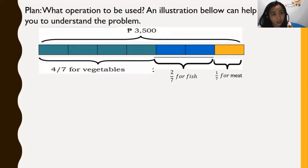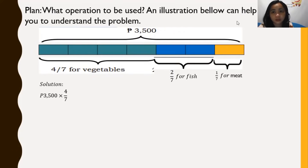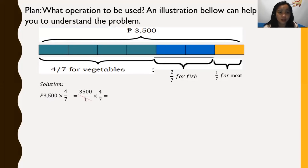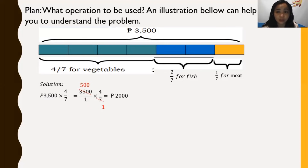Let's compute how much is allotted for vegetables. Solution: we have 3,500 times 4/7. That becomes 3,500 over 1 times 4/7. We can use cancellation here — 3,500 divided by 7 equals 500, and 7 divided by 7 is 1. So we now have 500 times 4 equals P2,000, which is the amount allotted for vegetables.